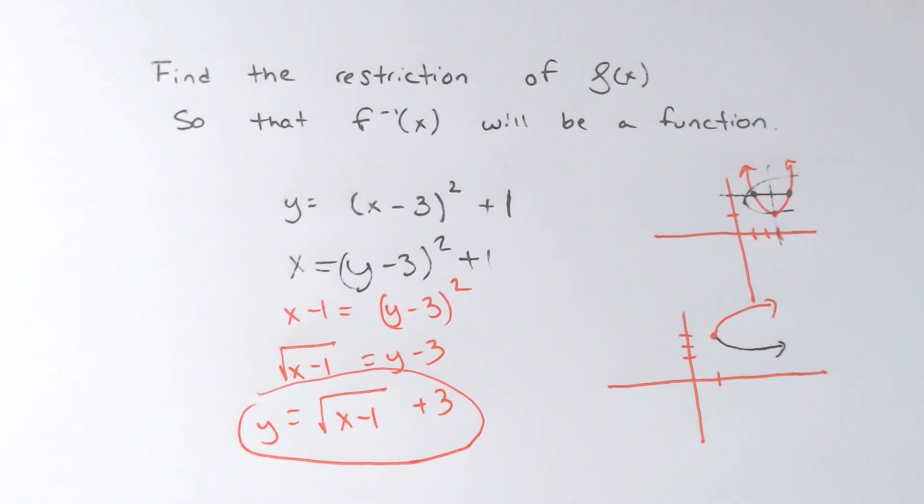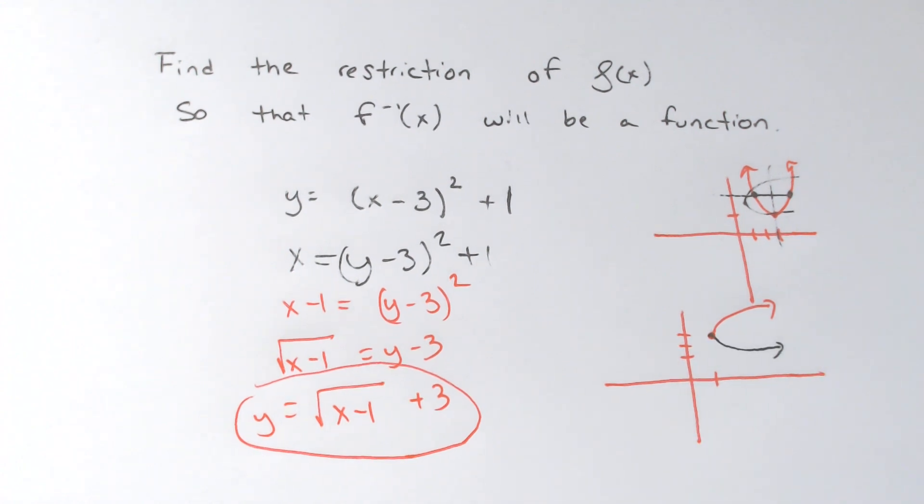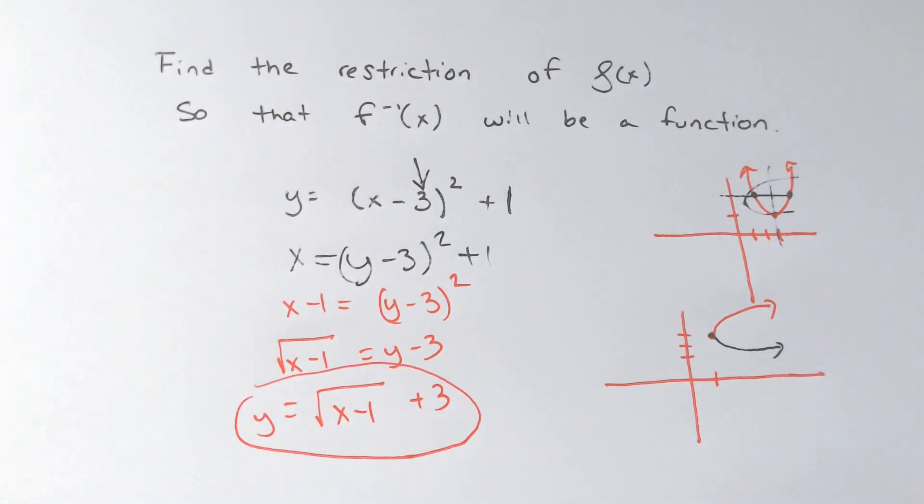So when they say restrict the domain of the original function, it is mattering. It matters in the sense of the y values because remember, with inverse, you switch your x and your y. So it relates to that number right there, which is the y value of 3 right here.